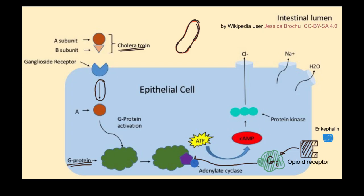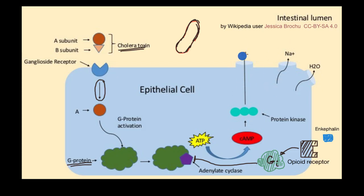Eventually the pathway leads to adenylate cyclase, then cyclic AMP, then protein kinase gets involved. The end result is that ions are released from the epithelial cell, and with that, water leaves the cell — and that's what causes diarrhea.